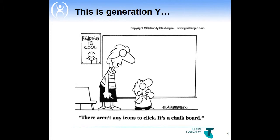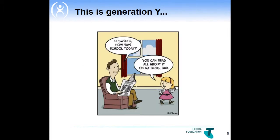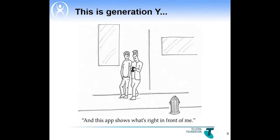This is Generation Y. The student is telling the teacher there aren't any icons and to click — it's a chalkboard. The father is asking his daughter, 'Hi sweetie, how was school today?' and the daughter replies, 'You can read all about it on my blog, Dad.' And in this cartoon, one person is saying to his friend, 'And this app shows what's right in front of me.'